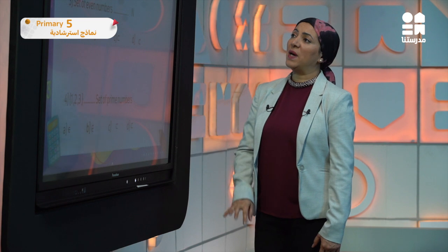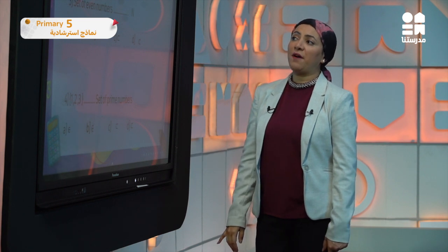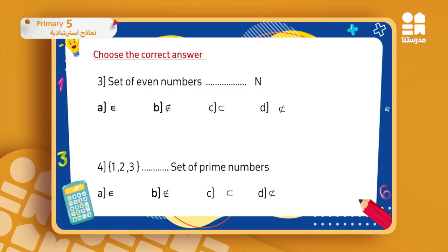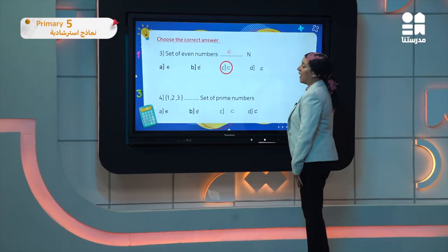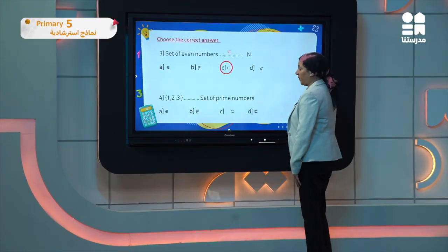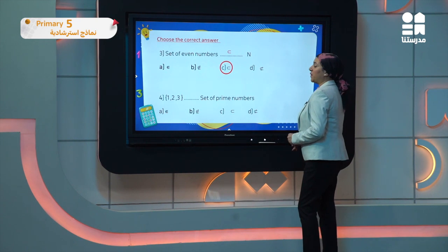Question three: the set of even numbers. As we said before, the set of even numbers is zero, two, four, six, and so on — it's an infinite set. Of course it is a part of N, so since it is a relation between two sets, I will use either subset or not subset. In this case it is subset.